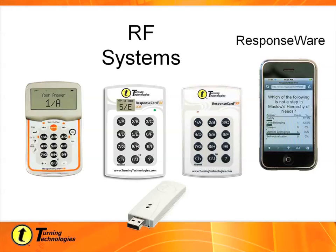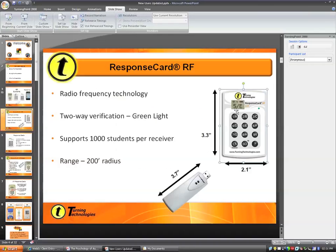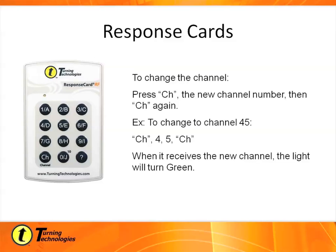If this is the case, we need to change the channel on both the receiver and each response card. I'll first talk about how to change the channel on the response card, then on the receiver. These RF response cards function the same way as the RF LCD — the only difference is there's no LCD screen in the middle. The cards come set automatically to a default channel, which is channel 41. If you need to change to a different frequency, you can do this through a three-step process on each response card.